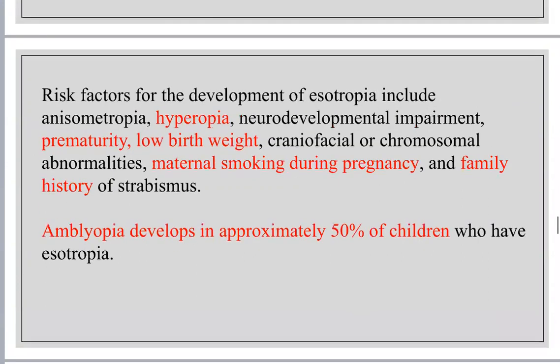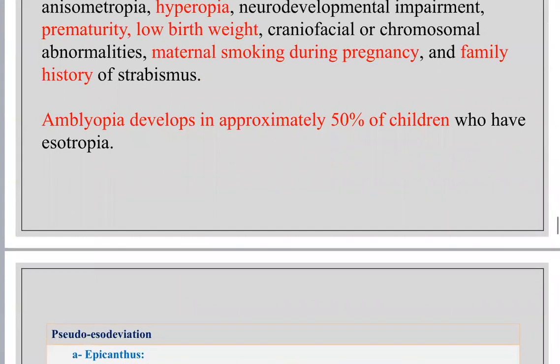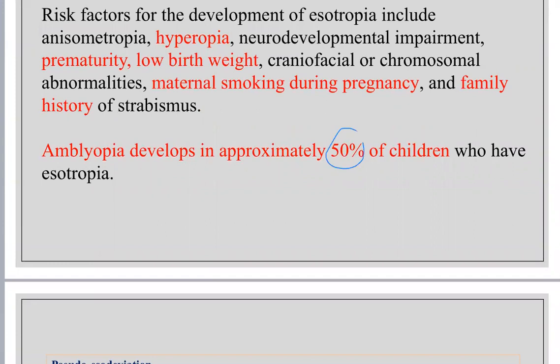Regarding risk factors, hyperopia is important because it is related to more accommodation and more convergence. So this is related to the accommodative type of esotropia. Also, prematurity or low birth weight, maternal smoking during pregnancy, and positive family history are all risk factors for development of esodeviation. Amblyopia develops in approximately 50% of children who have esotropia.